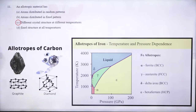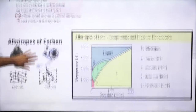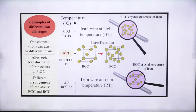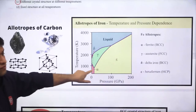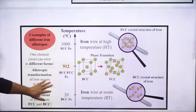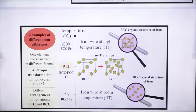The temperature ranges for iron allotropes: alpha ferrite (BCC) exists from room temperature up to about 900°C; gamma austenite (FCC) exists around 900–1394°C; delta ferrite (BCC) exists above about 1394°C. For public sector preparation, you need to remember the names, structures (BCC/FCC), and temperature ranges of these allotropes. We will discuss phase transformation in the iron-carbon diagram in detail later.